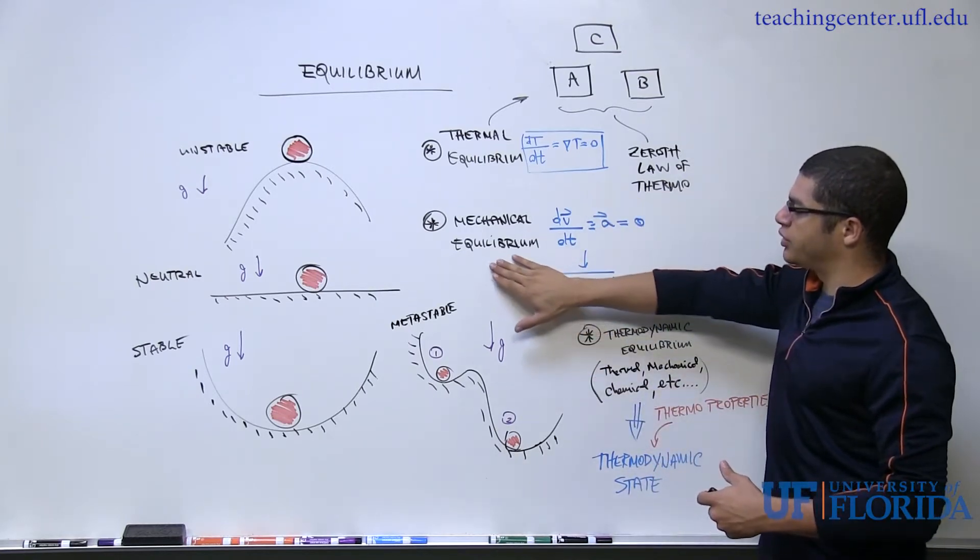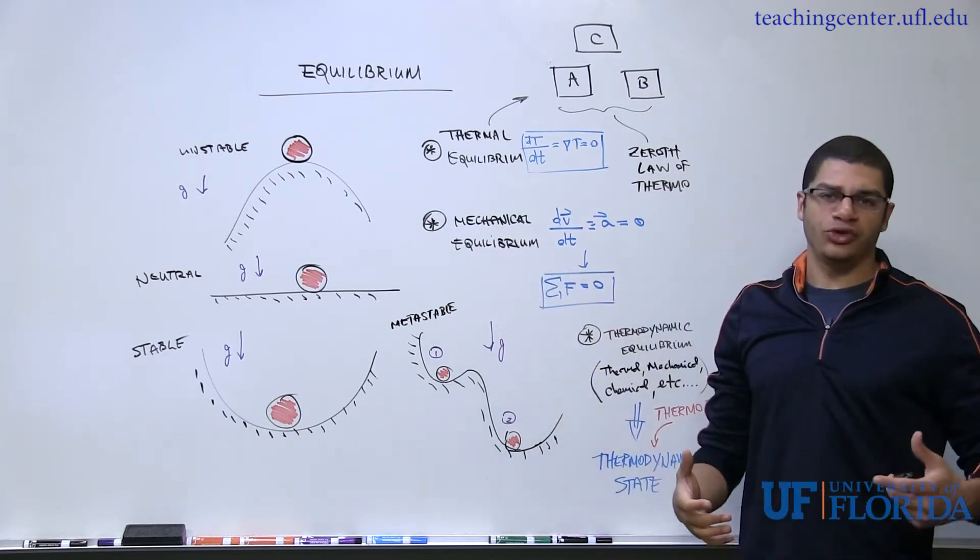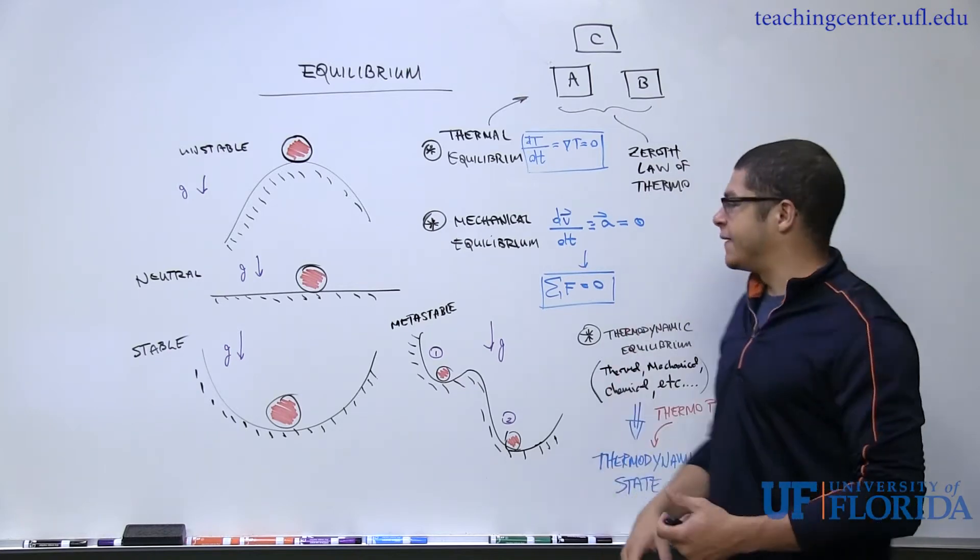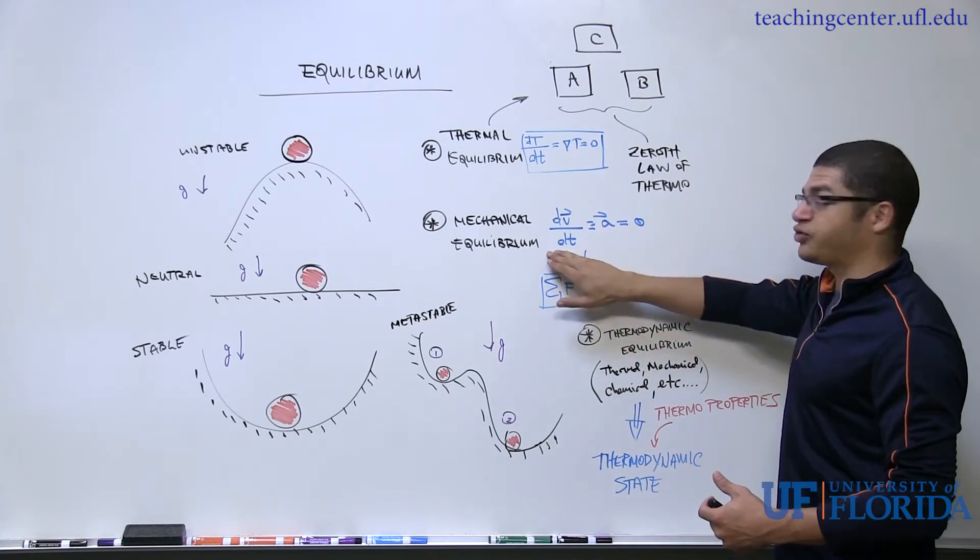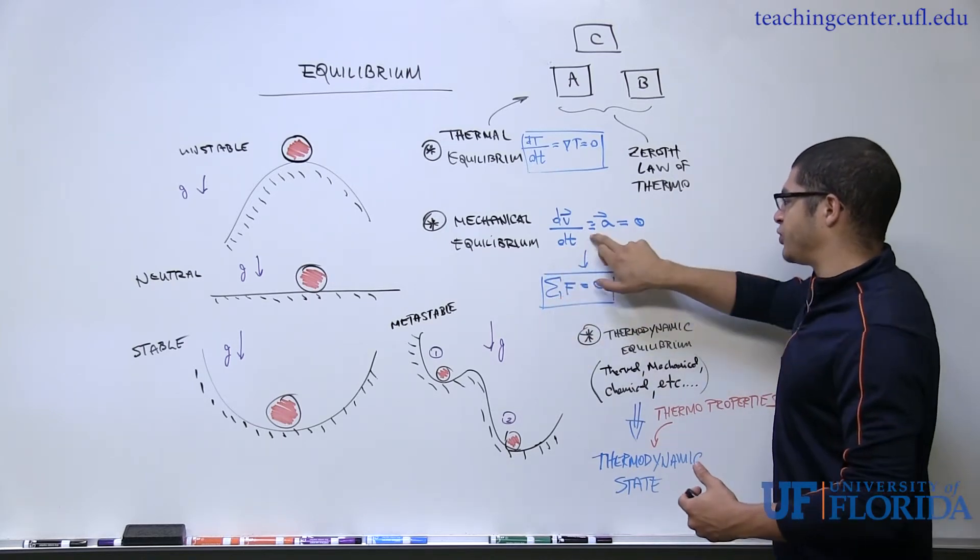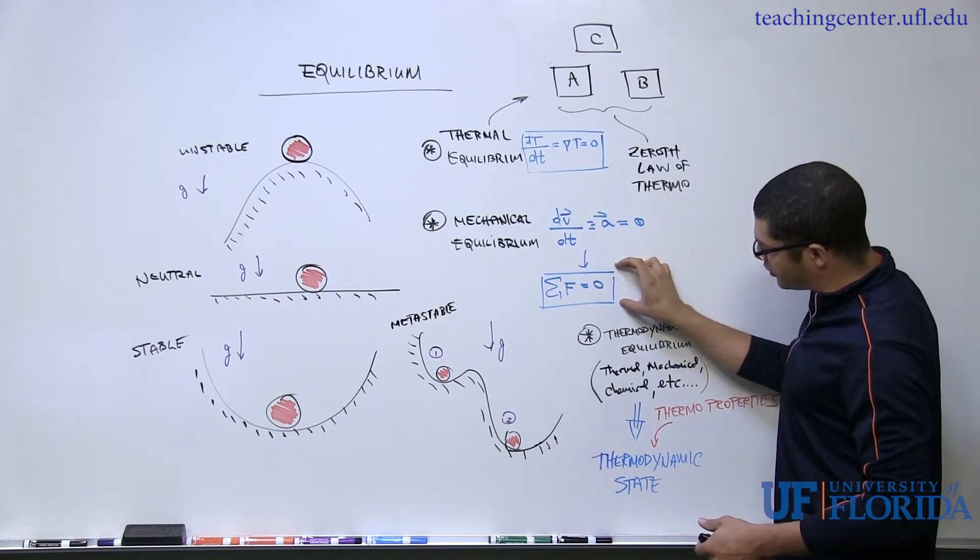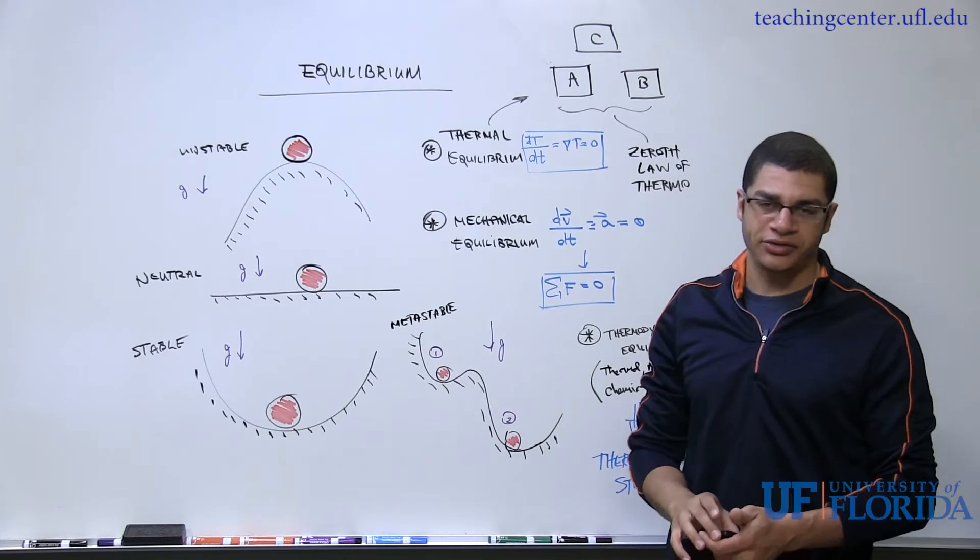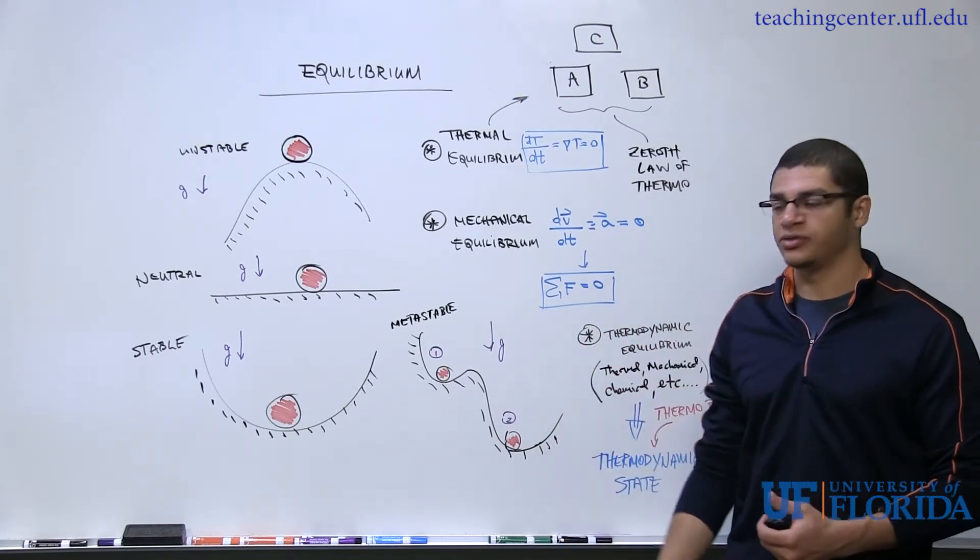So moving on to another type of equilibrium, mechanical equilibrium, which everyone should be familiar with from either physics 1 or 2 or statics, is essentially that there's no acceleration of the system. So the time rate change of the velocity vector, which is defined as the acceleration, is equal to zero. And from this, we can infer that there is no net force acting on the system, and hence, the system is either at rest or moving at a constant speed.